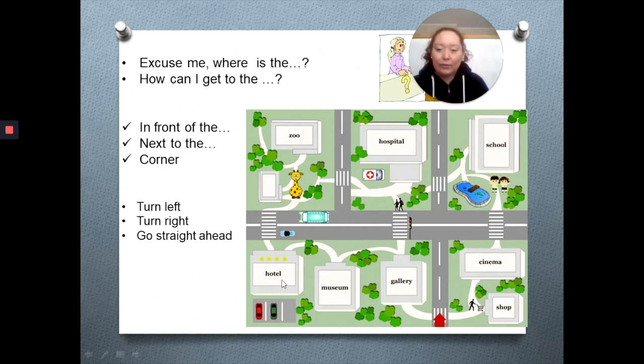Vamos a hacer la siguiente pregunta. Si yo, supongamos que yo estoy aquí, y quiero ir al hotel. Y me encuentro con esta persona que está comprando aquí y le pregunto, excuse me, where is the hotel? O también puedo hacerle la pregunta, how can I get to the hotel? Esa persona me va a decir, go straight ahead. In the corner, turn left. Porque tenemos que girar hacia la izquierda.